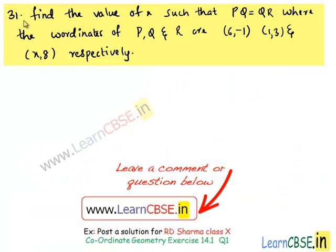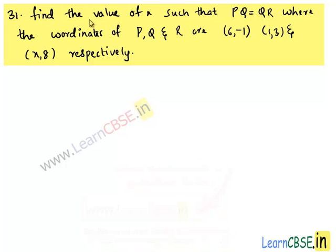Chapter 14, Exercise 14.2. Let's see the 31st question. Find the value of x such that PQ equals QR where the coordinates of P, Q and R are (6,-1), (1,3) and (x,8) respectively.